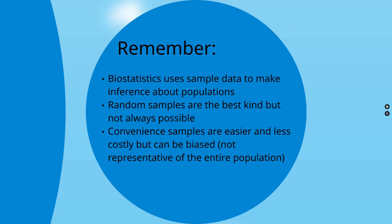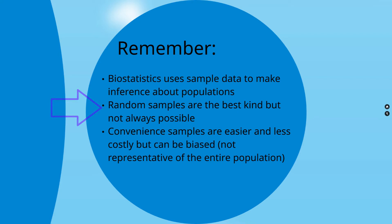Things to remember: we use sample data to make inferences about populations because populations are difficult to capture. Random samples are the best kind of samples but are not always possible. Therefore, convenient samples are easier and less costly but can be biased — they won't necessarily be representative of the entire population.